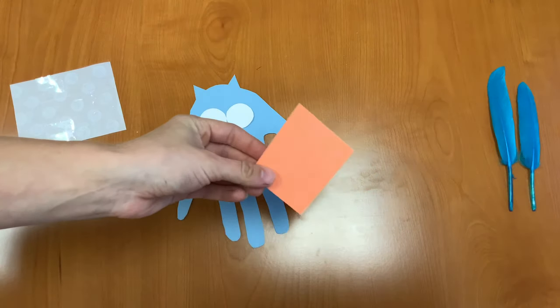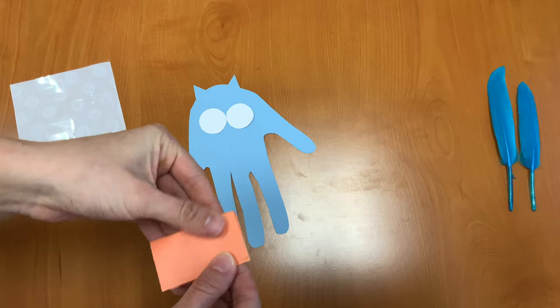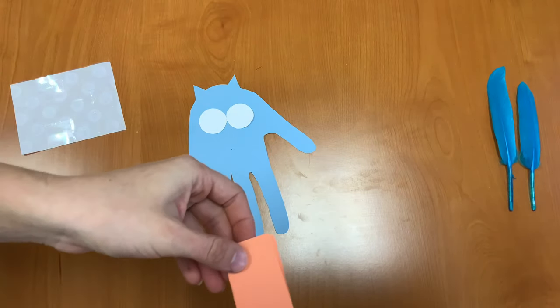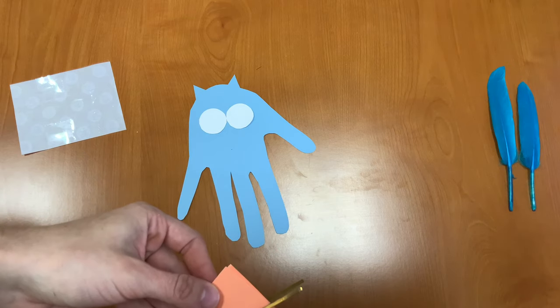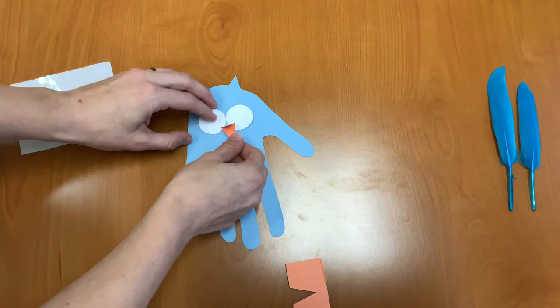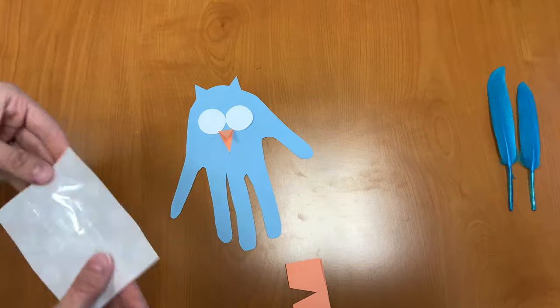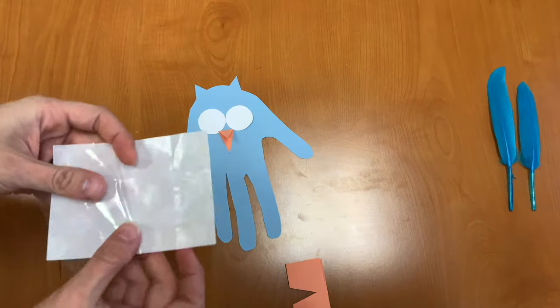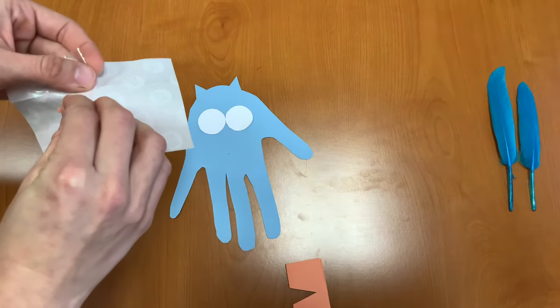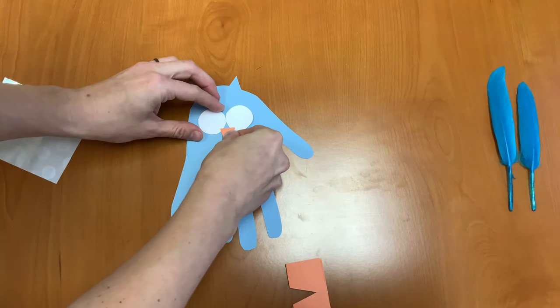Next we're going to take our orange piece of paper, fold it in half, and we're going to cut out a triangle. This will be our owl's beak. Now we can attach this using a piece of glue dot right in between the nose.